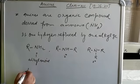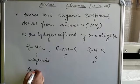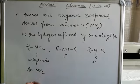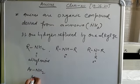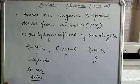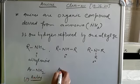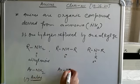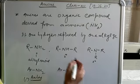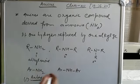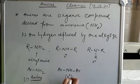Similarly, if an aryl group replaces one hydrogen from ammonia, it is known as aryl amine or simply aniline. The common name is aniline and it is a one-degree amine. If two hydrogens are replaced by two aromatic groups, it is known as a two-degree amine.